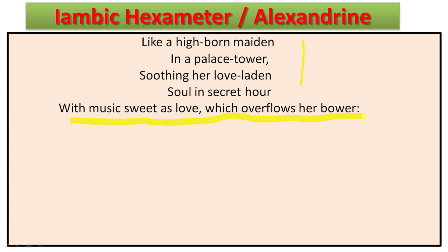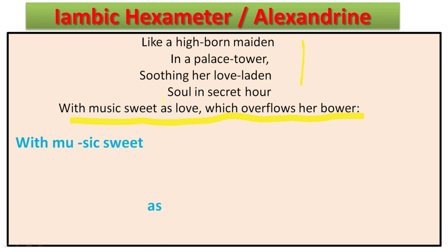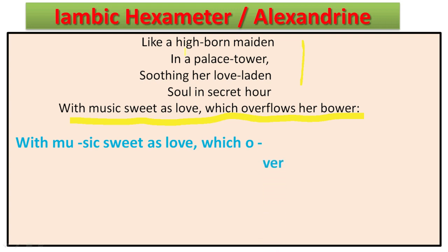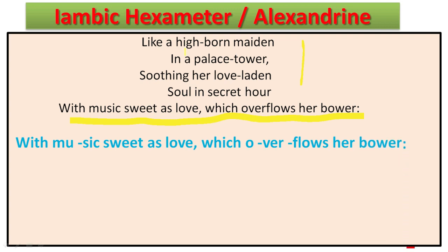Taking the last line 'With music sweet as love which overflows her bower,' let's count the syllables: 'with' (1), 'mu-sic' (2), 'sweet' (1), 'as' (1), 'love' (1), 'which' (1), 'o-ver-flows' (3), 'her' (1), 'bower' (1) — giving us 12 syllables total. We then identify accented syllables: 'mu-,' 'sweet,' 'love,' 'flows,' 'bower' carry the stress. With 12 syllables divided into 2 per foot, we get 6 feet — making this hexameter.